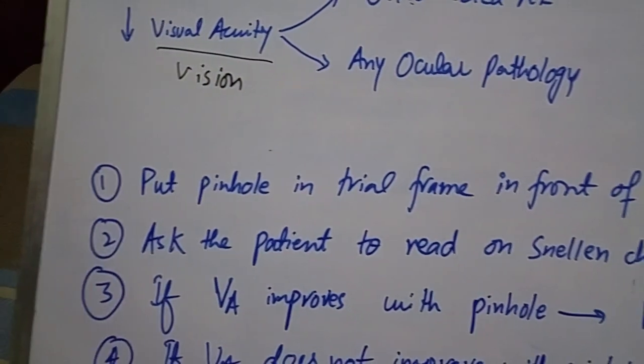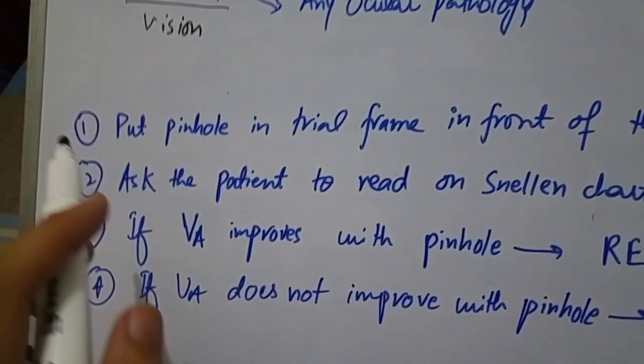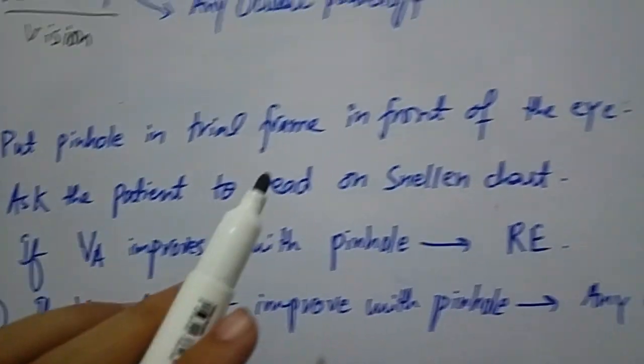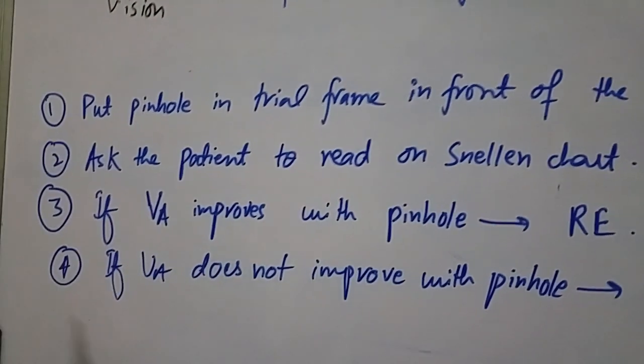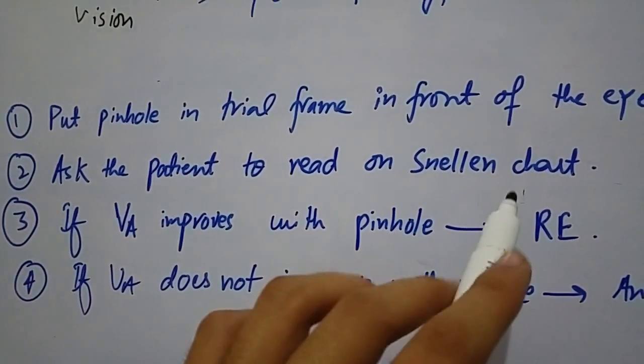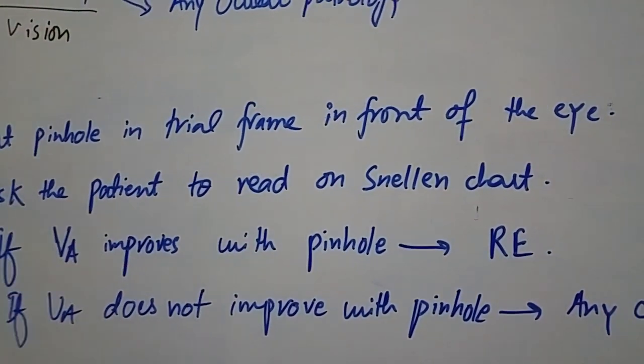How to do it? The procedure for pinhole is that you put pinhole in trial frame in front of the eye being tested and occlude the other eye. Then ask the patient to read a Snellen chart or ETDRS chart or any other vision chart.